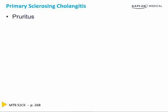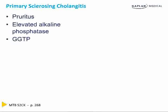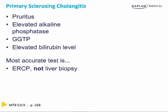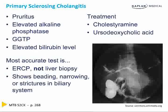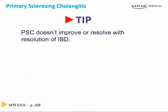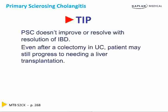Primary sclerosing cholangitis is an autoimmune condition that presents with pruritus, elevated alkaline phosphatase, elevations in GGTP, and elevated bilirubin. The most accurate test is actually an ERCP, not a liver biopsy — it will show beading, narrowing, or strictures in the biliary system. Treatment is with cholestyramine and ursodeoxycholic acid. Importantly, primary sclerosing cholangitis doesn't improve with resolution of IBD; even after colectomy for ulcerative colitis, patients may still progress to needing a liver transplant.